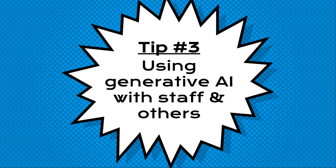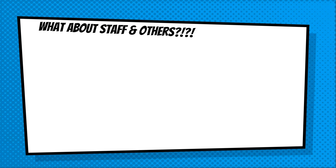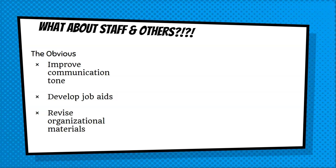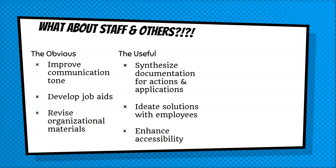So what does it look like to use these tools with other people, particularly any staff member? It certainly can be helpful to craft and edit communications, particularly for tone. There is this level of HR speak that can be particularly vexing to the rest of staff. AI can be used to develop job aids and revise and update organized materials, really improving the kind of communication that comes out of HR. Along those lines, AI can help synthesize complex information and documentation into actions and applications for the institution. It can also be used to ideate solutions to employee issues, and HR can promote the use of AI to further enhance accessibility across the organization — that's a win for everybody.